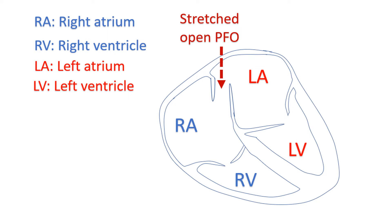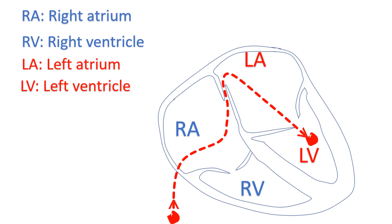If too much right atrial blood with lower oxygen content reaches the left atrium, the oxygen saturation in the blood vessels of the body can fall, leading to bluish discoloration of the skin. Small PFOs cannot produce much problem due to the shunting of blood across them unless stretched open by other diseases.